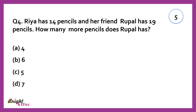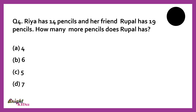Ria has 14 pencils and her friend Rupal has 19 pencils. How many more pencils does Rupal have? 19 minus 14 is equal to 5.